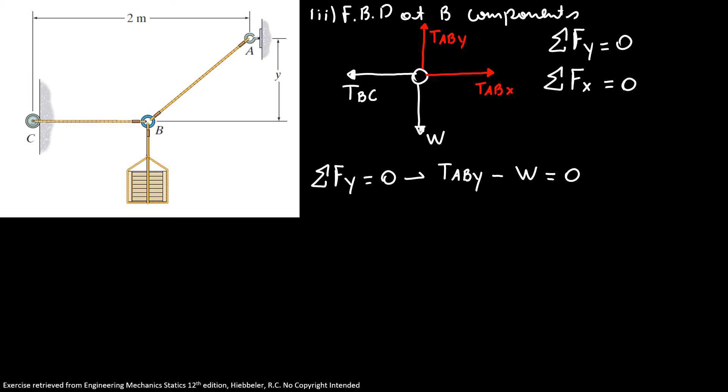I know my tension AB in Y direction is 0.5 times my tension AB minus the crate weight, 200 kilograms times gravity, 9.81, has to equal zero. So I know that 0.5 times my tension AB equals 1,962 newtons. And my tension AB equals 3,924 newtons.